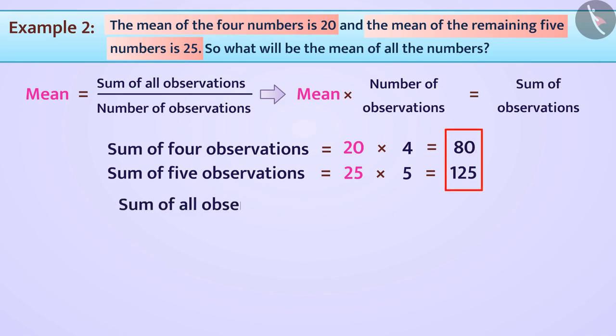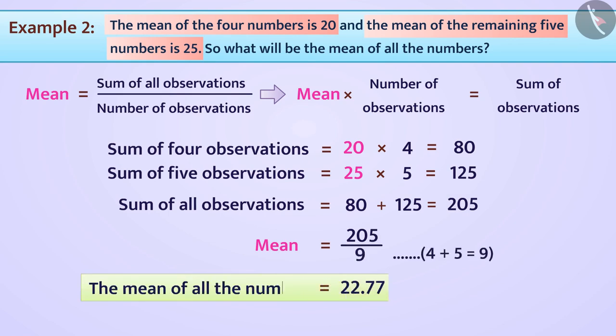Therefore, the sum of all observations, 4 plus 5 is equal to 9, will be 80 plus 125 is equal to 205. Now, the mean will be derived as mean is equal to sum of all observations divided by number of observations, 205 divided by 9 is equal to 22.77.